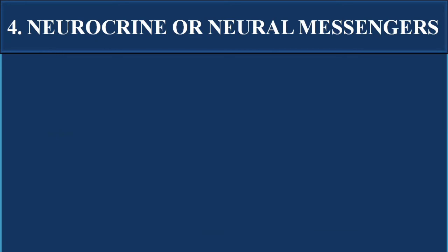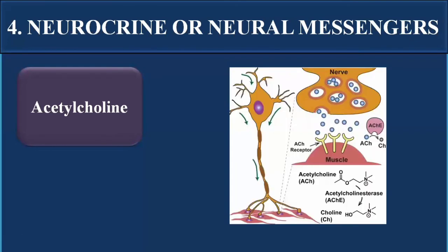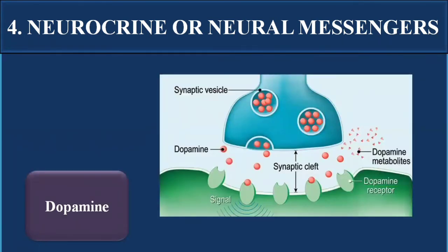Examples of neurocrine messengers include acetylcholine and dopamine. Acetylcholine can communicate between nerve cells, and neurons also supply chemical substances to muscles, where receptors are present on the muscle cells. Dopamine is a neurotransmitter released by one nerve cell into the synaptic cleft and taken up by the adjacent nerve cell.